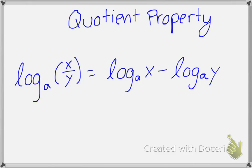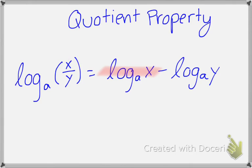The quotient property is very similar, except here you have division within your logarithm, so you can separate them by subtracting. The order of the logarithms doesn't actually matter — what matters is the sign associated with your logarithm. Rather than thinking of it as subtracting goes with division, think of it as: a positive logarithm will have a value in the numerator, and a negative logarithm will have a value in the denominator.